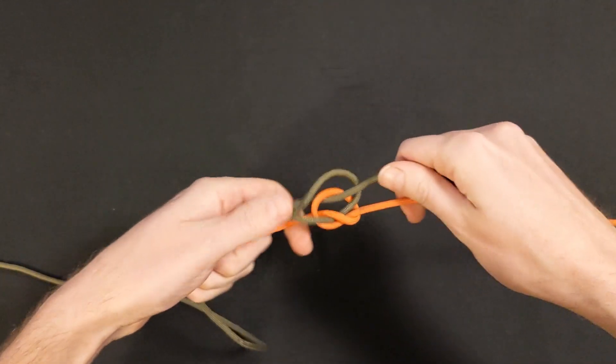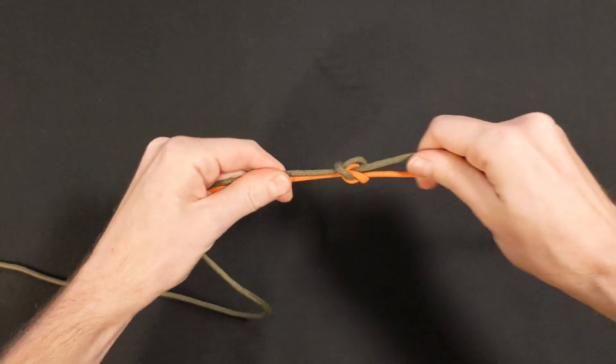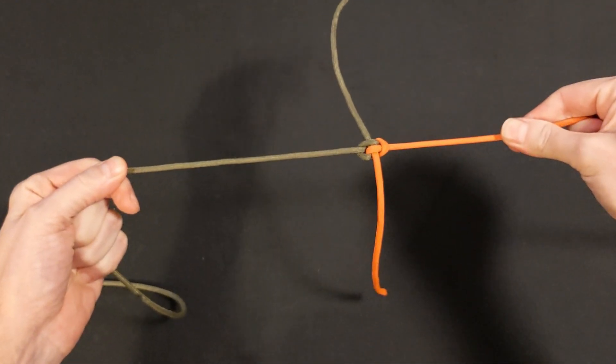When tightening the knot, you can gently hold the working ends parallel to the standing ends to keep the knot intact as you pull the standing ends tight.